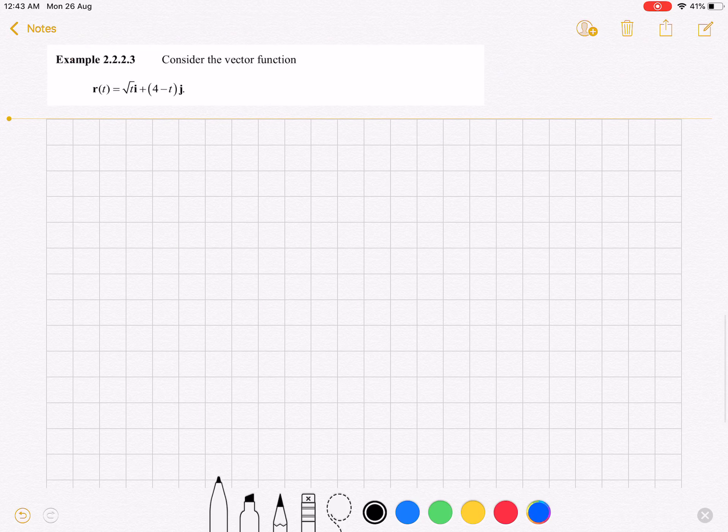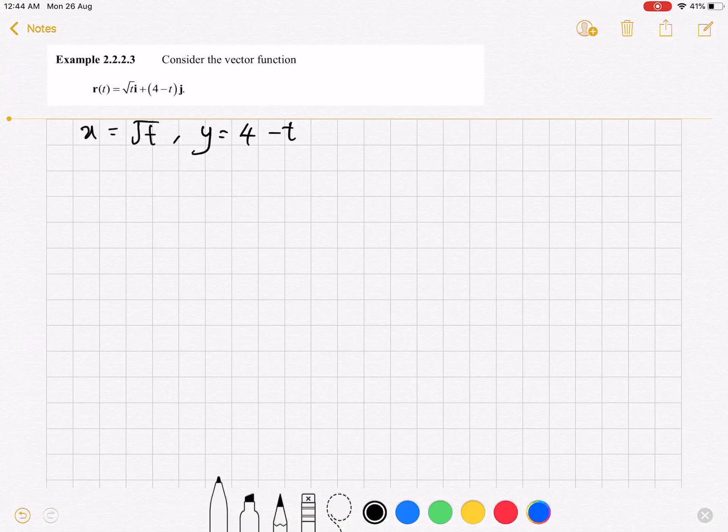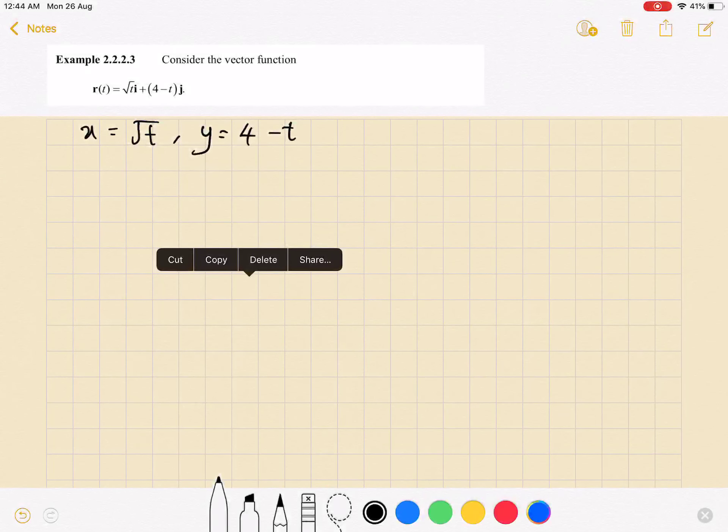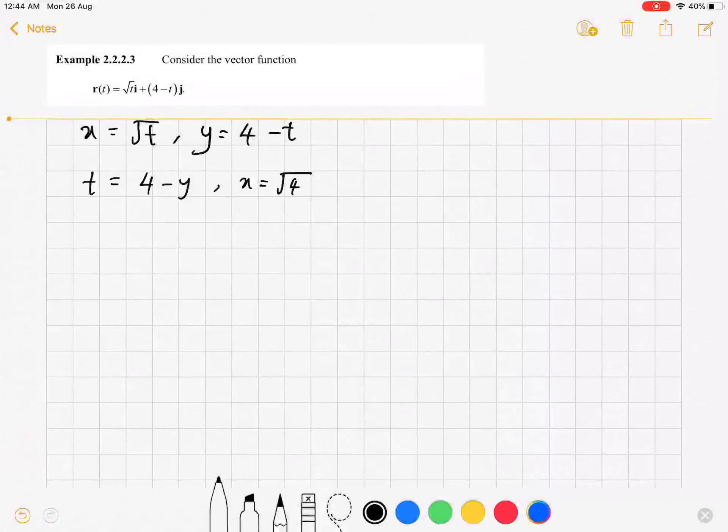First thing, you have to bring out the parametric equation, x equals to √t, y equals to 4 minus t. And then, by using the technique of eliminating the t to get the graph, you have to be creative. I use the second equation to have t equals to 4 minus y. So then, x will be square root 4 minus y.